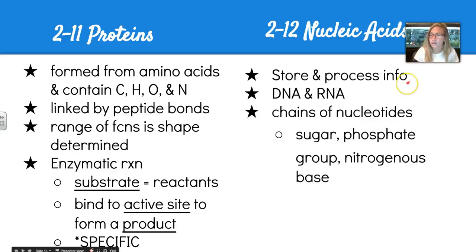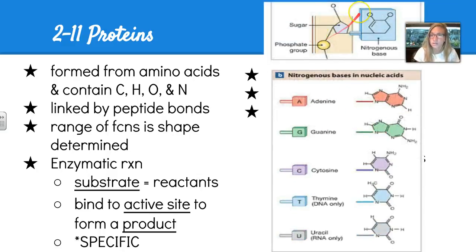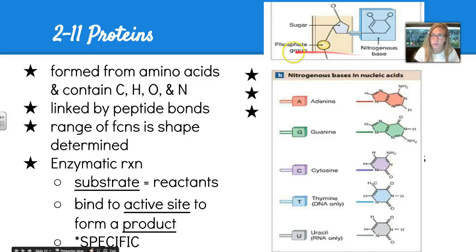Section 2.12 covers nucleic acids, which store and process information — we know them as DNA and RNA. They are made up of chains of nucleotides, which are formed by a sugar-phosphate group and a nitrogenous base, as shown in this diagram. More specifically, the exact nucleotides for DNA and RNA are listed here.